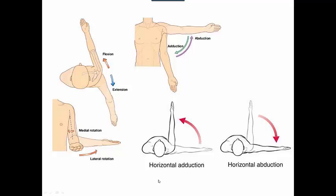We also have this added-on motion called horizontal AB and ADduction. That is when you ABduct your glenohumeral joint to 90 degrees and then you can do horizontal AB and ADduction.